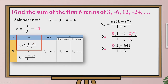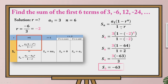Simplifying the numbers inside the parenthesis: 1 minus 64 is equal to negative 63. The 3 in the numerator and denominator cancel, leaving 1 times negative 63, which is still negative 63. So we can say that the sum of the first 6 terms of this geometric sequence is negative 63.